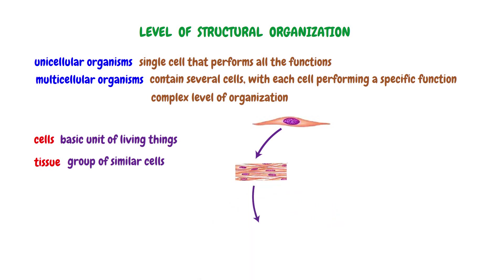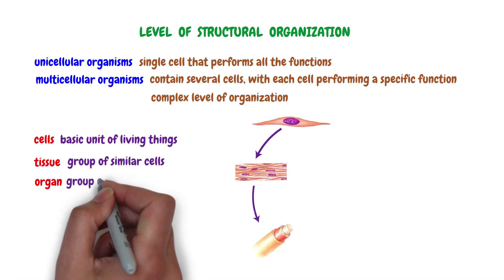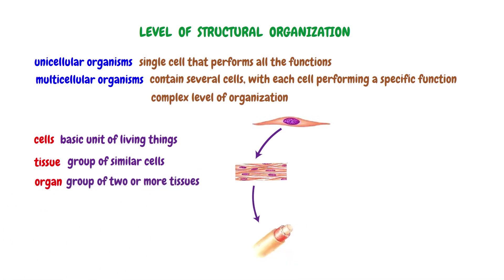The third level of complexity is the organ. An organ is a group of two or more tissues working together to perform a specific function. For example, a blood vessel is an organ — it consists of different tissues working together. The middle layer is composed of muscle tissue, and the inner layer consists of epithelial tissue. These two, along with other tissues working together, form a blood vessel that transports blood.